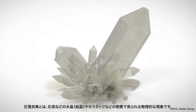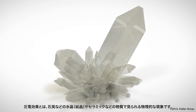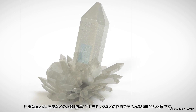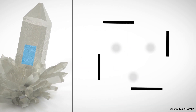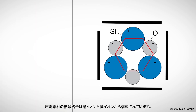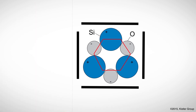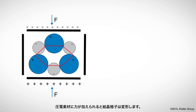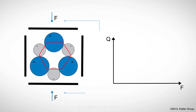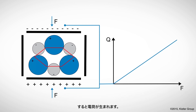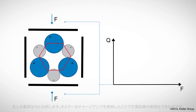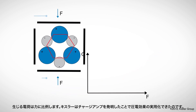The piezoelectric effect is a physical phenomenon that can be observed in certain crystals, such as quartz and ceramic materials. The crystal lattice of piezoelectric material consists of positive and negative ions. When force is exerted on the material, the crystal lattice is deformed. As a result, electrical charge is created on the material's surface. The charge is proportional to the force that was exerted.